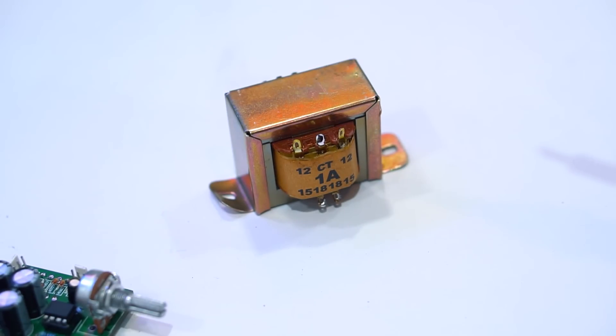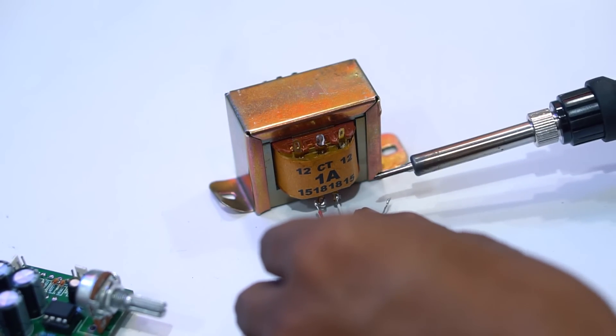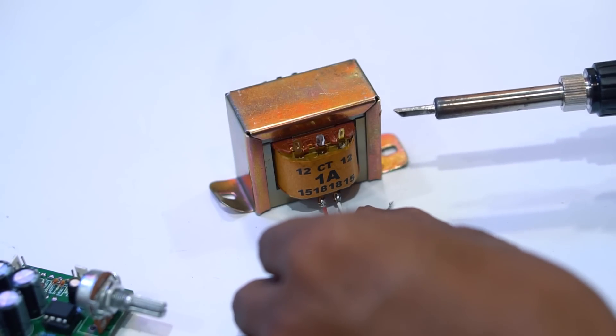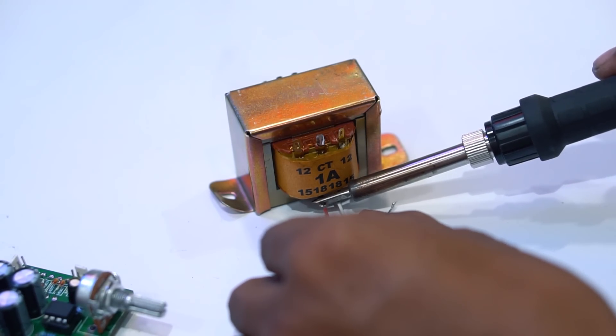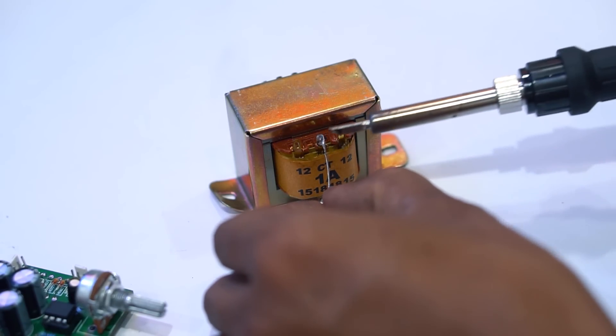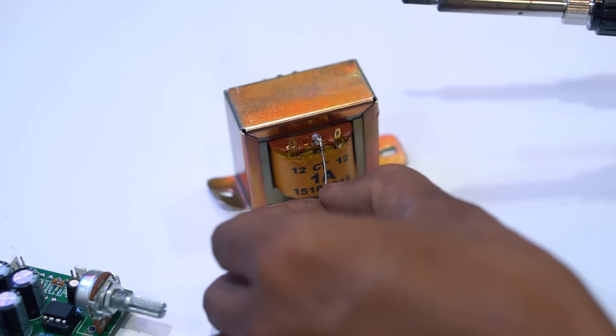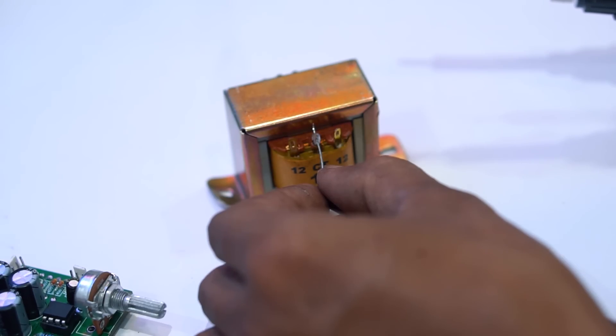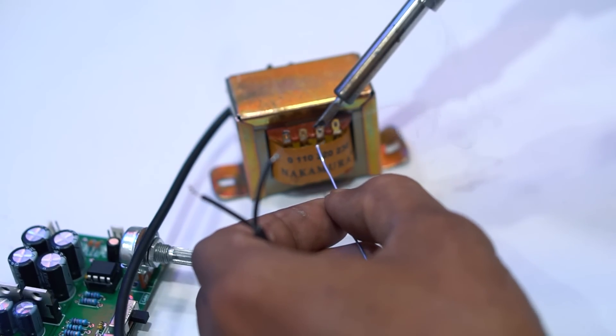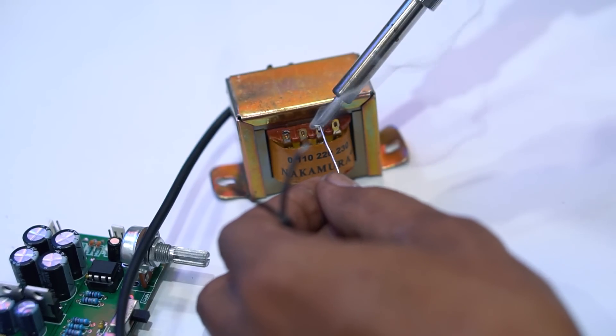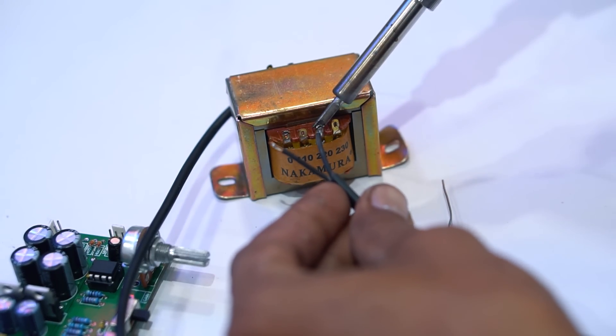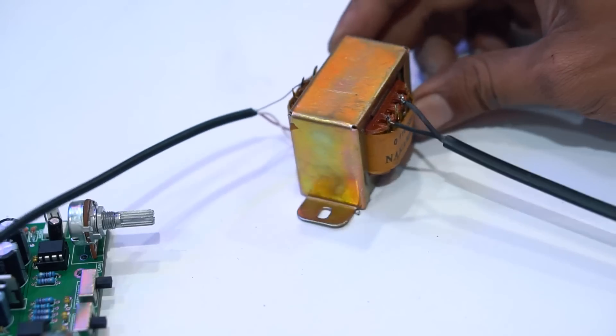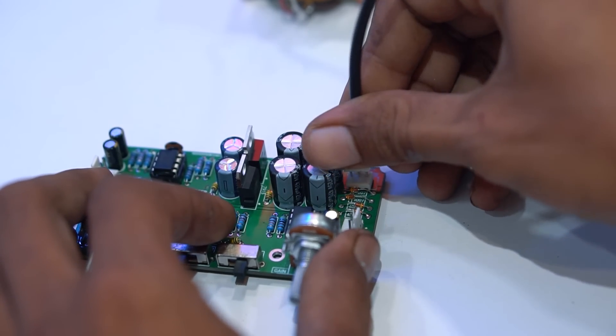For the power supply, I use a transformer with 18VAC-CT voltage. For initial testing, I use several measuring instruments such as oscilloscope, audio generator, and avometer. So I won't add an amplifier or speaker to test this subwoofer control kit. So we can see the results through the oscilloscope, with input signal from the audio generator.